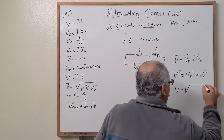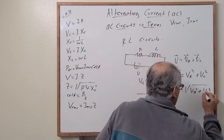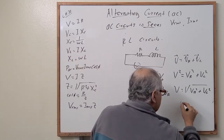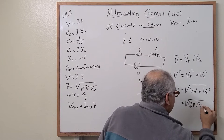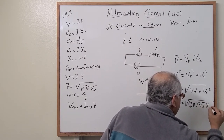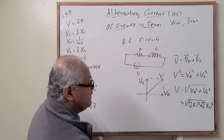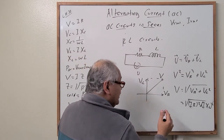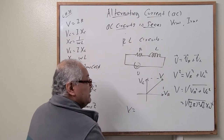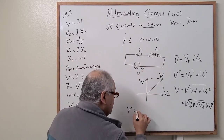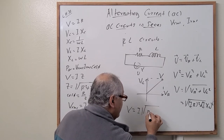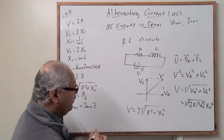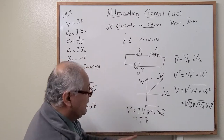The magnitude equals the square root of V_R squared plus V_L squared. Substituting the values, this equals the square root of (current times resistance) squared plus (current times reactance of the inductor) squared. Since the current is constant in series, the total voltage equals current times the square root of R squared plus X_L squared, which equals current times Z, where Z is the impedance.